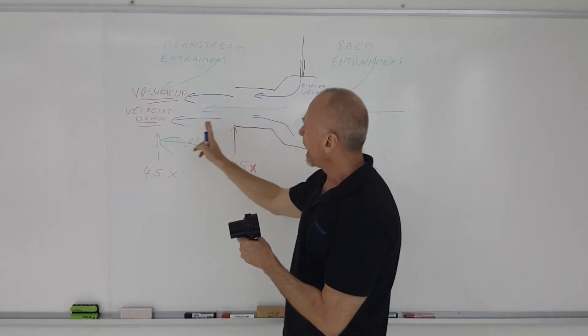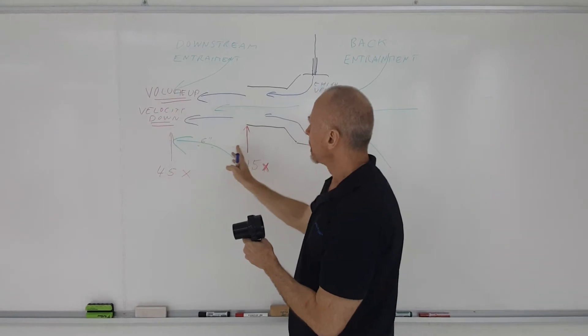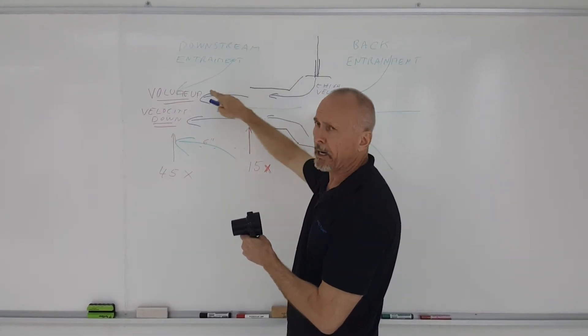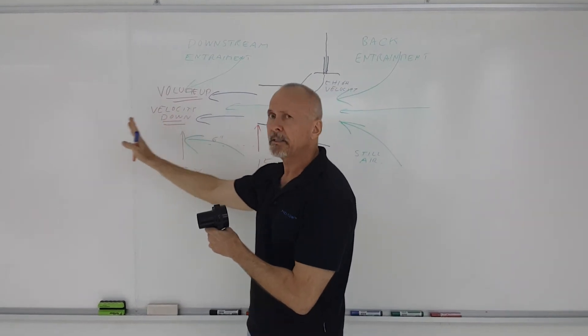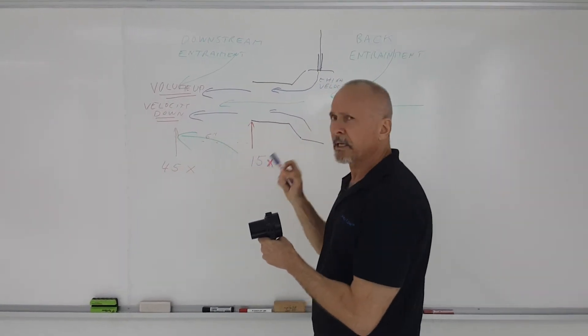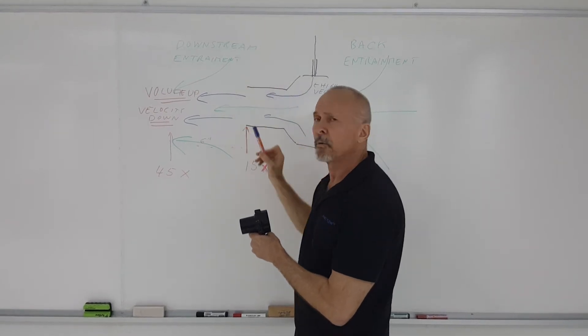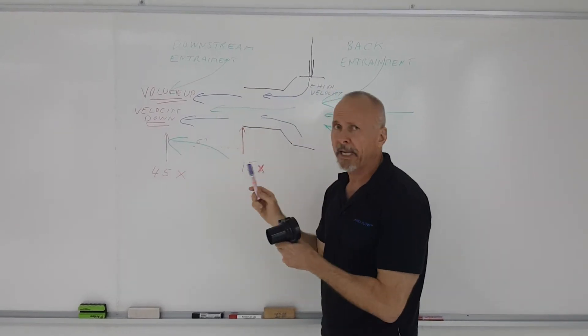As the air moves out, this combined air moves out another six inches, you get downstream entrainment of more air. Again, slowing it down. So the basic concept is, as the volume goes up, that's amplified, the velocity will go down. This makes sense.